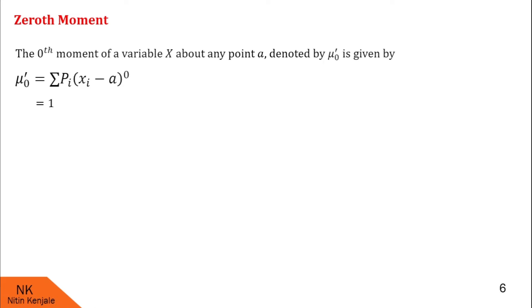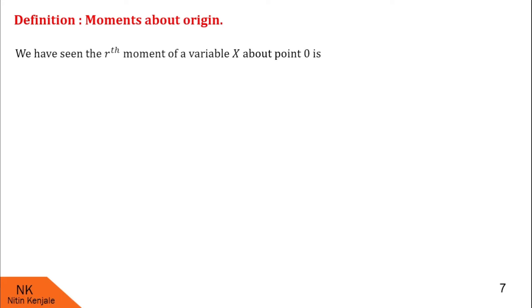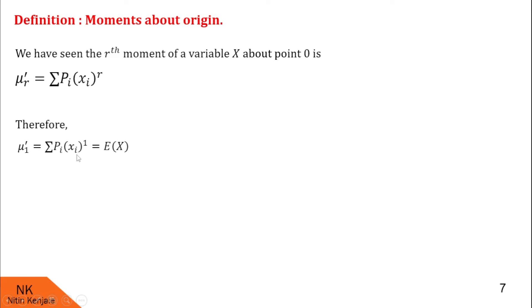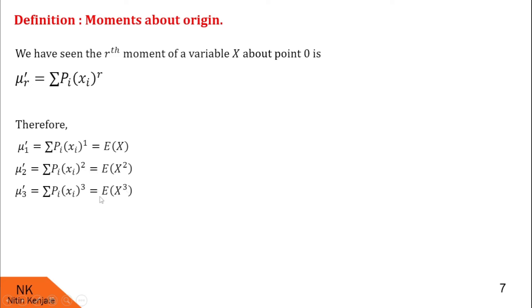Now let us recall moments about origin, that is 0. The rth moment of variable x about point 0 is given by μr' equal to summation pi times xi^r. Therefore, the first moment about 0 is summation pi·xi, which is nothing but the formula for E(x). Similarly, the second moment about origin is summation pi·xi², denoted μ2', which equals E(x²). Similarly, μ3' gives E(x³), and μn' gives E(x^n).